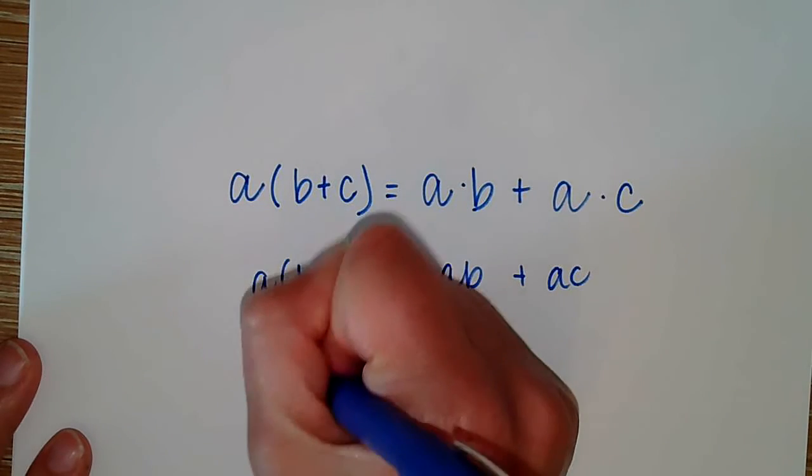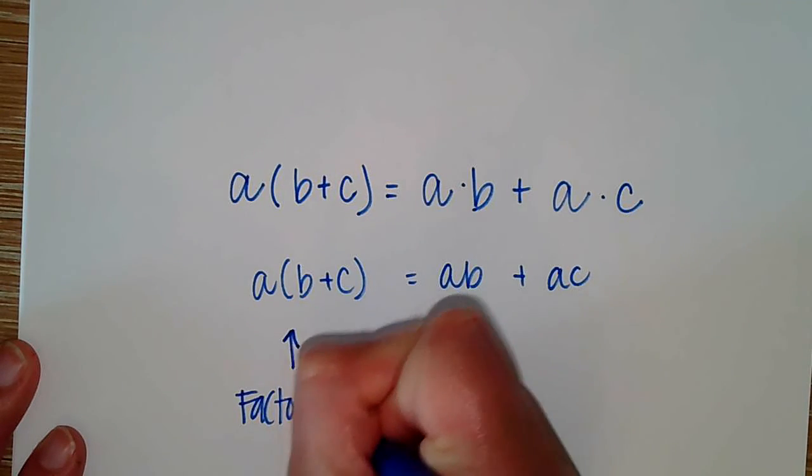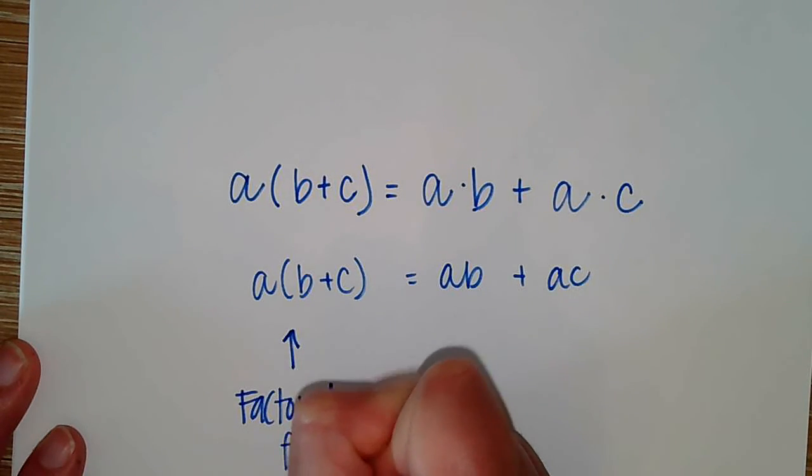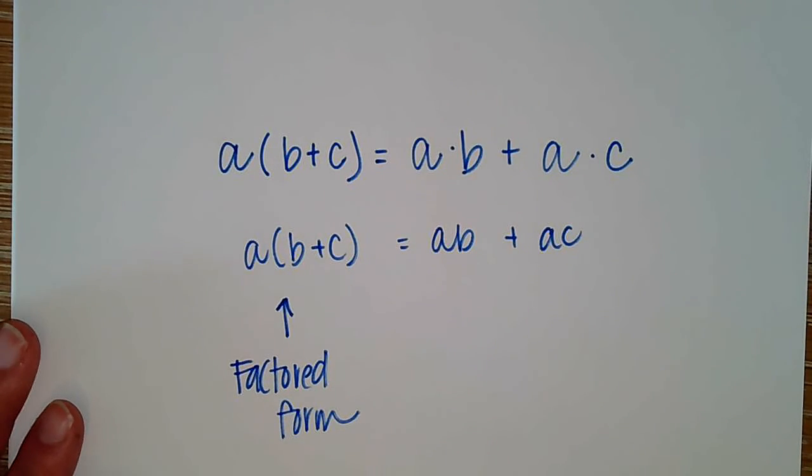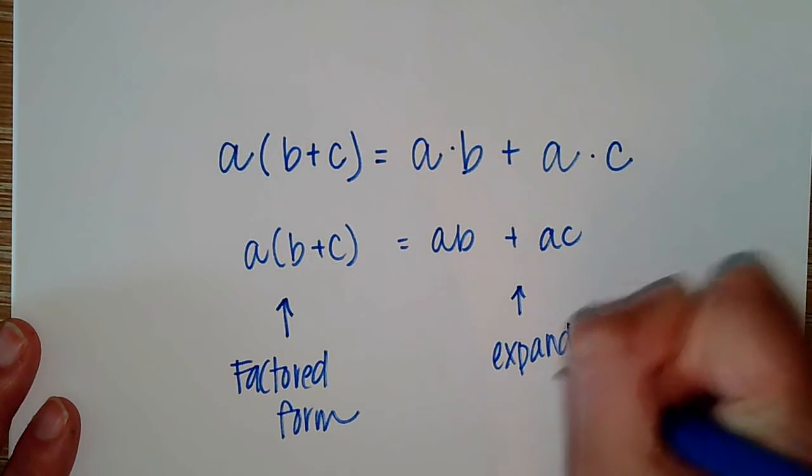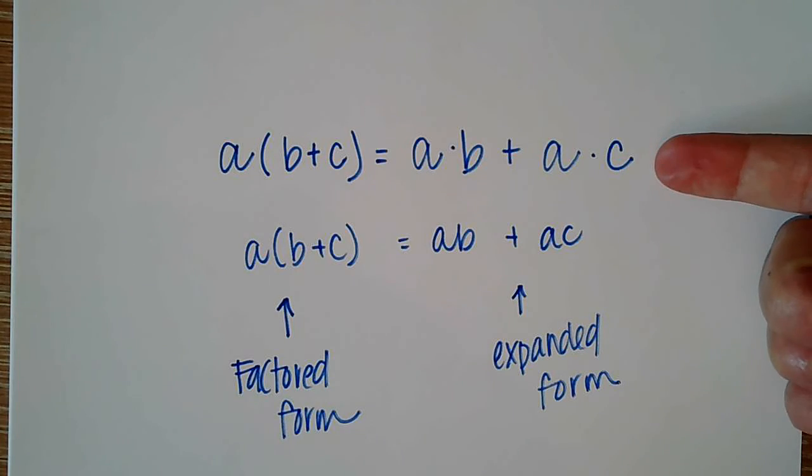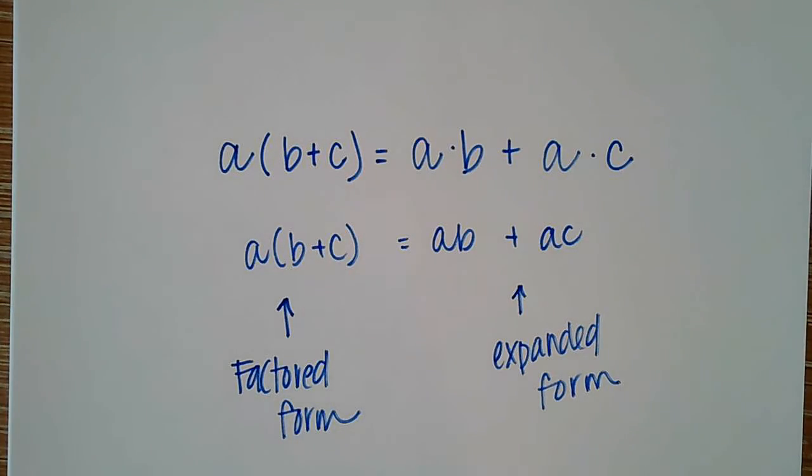One more big piece to know is this is called your factored form. This is factored out where this is expanded out, your expanded form. We can simplify from that expanded form down to as few terms as possible.